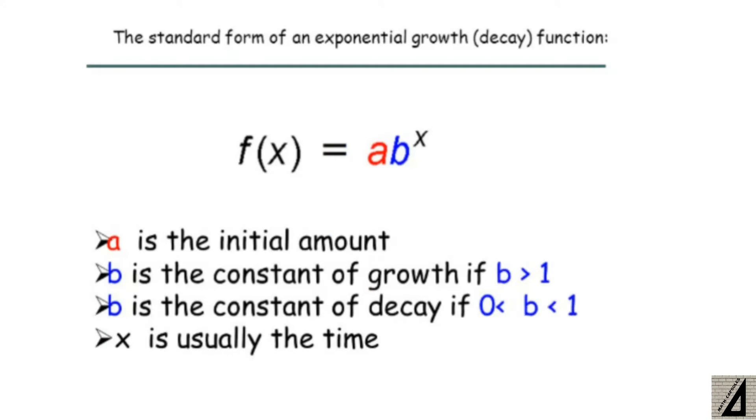Here is the standard form of an exponential growth or decay function, where f of x equals a b to the power x, where a is the initial amount, b is the constant growth if b is greater than 1, and b is the constant of decay if b is between 0 and 1, and x is usually the time.